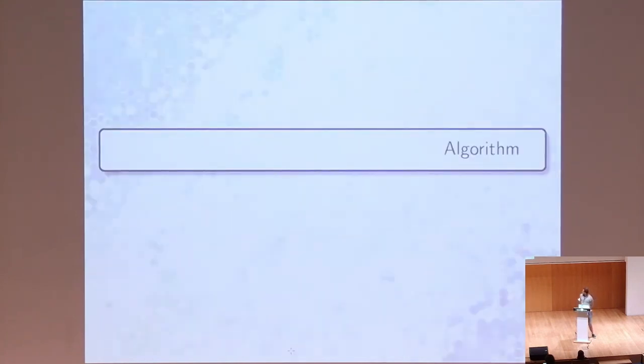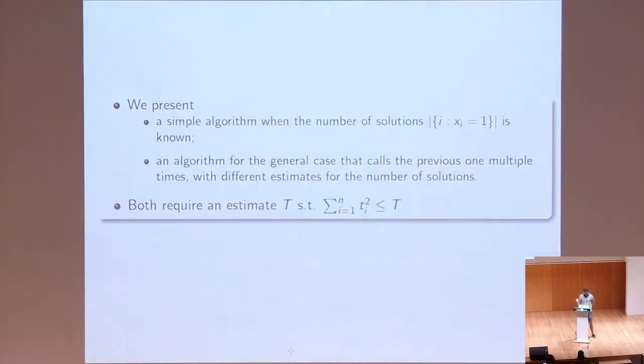So, what is the algorithm? We construct two algorithms. One for the simplest case when we know how many solutions there are, or at least a good bound on this number. And the general case then is obtained by a standard technique running the previous algorithm repeatedly. And in both cases, we require the separate bound on the sum of squares to be known. So, this is a limitation of our approach here.